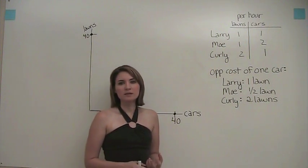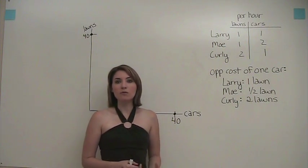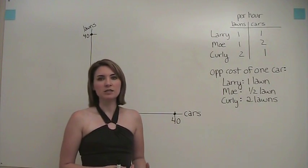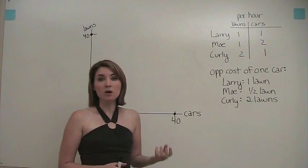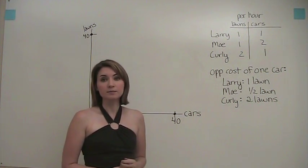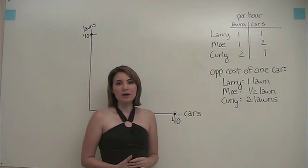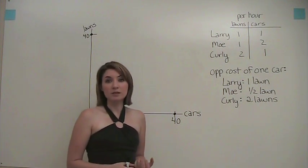Now, I want to talk about what we can do to construct the overall production possibilities frontier and understand what that looks like, assuming that we can have any combination of lawn mowing and car washing from these three guys. So in order to be able to do this, we need to think about this concept called opportunity cost.